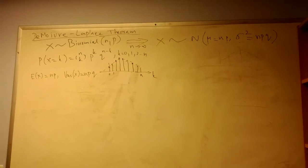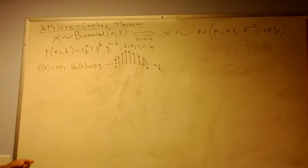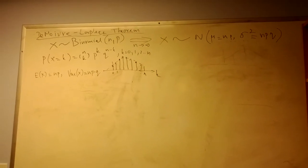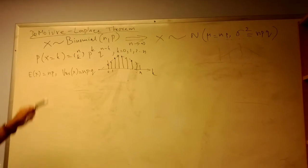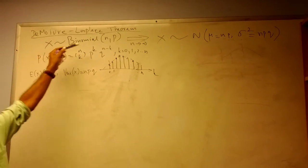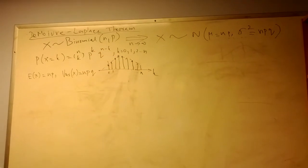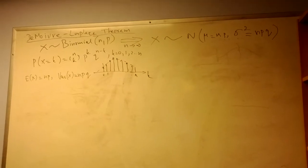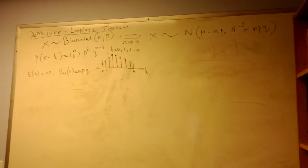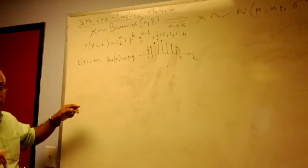Let me talk about the Moivre-Laplace theorem, which states that a binomial random variable will begin to look like a Gaussian random variable under some conditions.